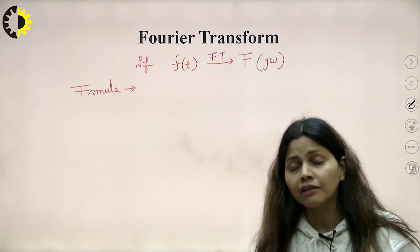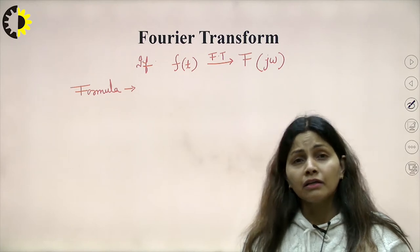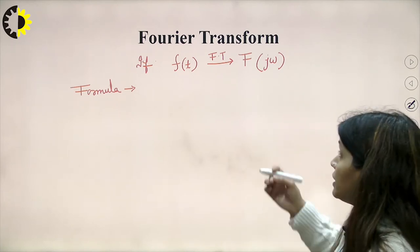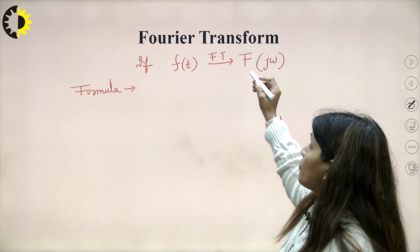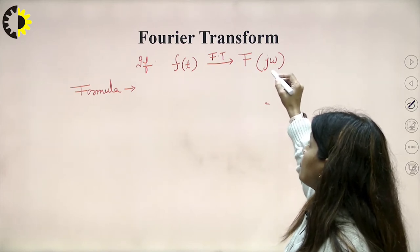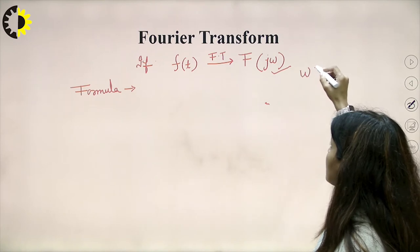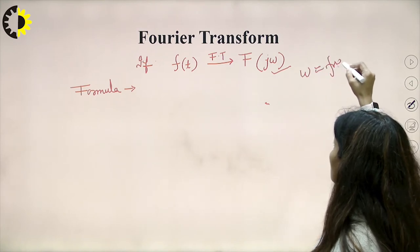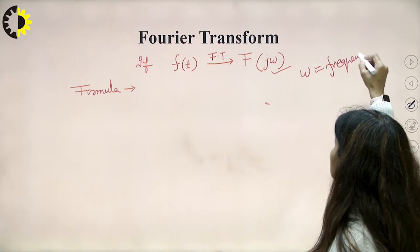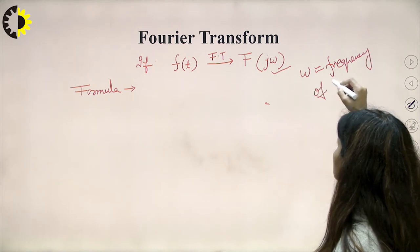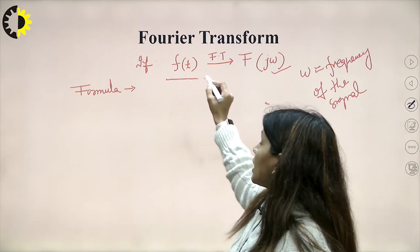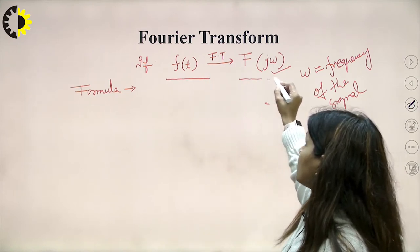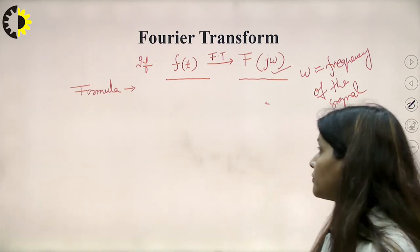For any signal f(t) which is a function of t, its Fourier transform can be written as a function of frequency, where omega is the frequency of the signal. So if a signal is given in time domain, its Fourier transformation can be written as F(jω).